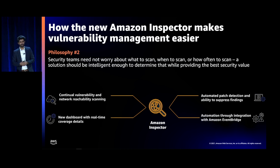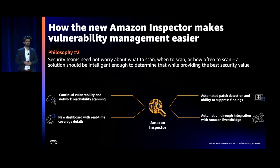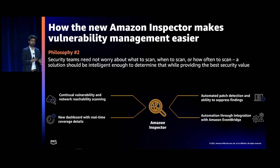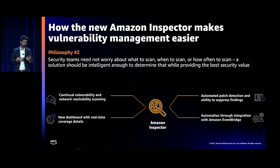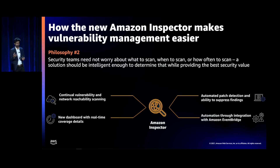Aligning with the other philosophy: I got a lot of questions from customers — how often should I scan my instances? Is one day enough? Is once a month enough? Should I scan every six or twelve hours? This is consistent across the industry, and we felt customers should not have to decide that. So what we do now is continually scan — we do continual vulnerability and network reachability scans. In the next slide I'll deep dive into what I mean by continual, and cover other key features like Inspector Score.